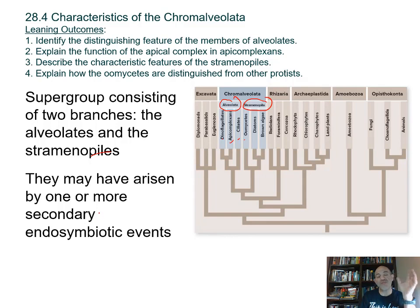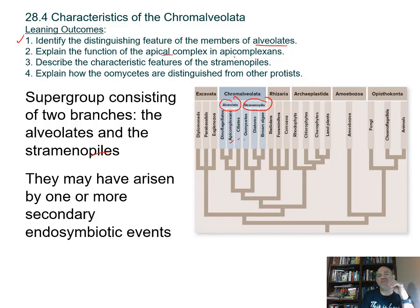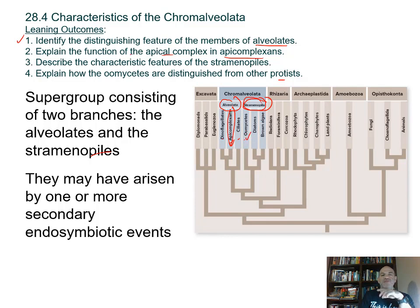Several subgroups exist within Chromalveolata. Some of them do have the ability to photosynthesize — in these cases it's secondary endosymbiosis, so the chloroplast would have evidence of four membranes around it. Learning outcomes include identifying distinguishing features of the alveolates, explaining the function of the apical complex in apicomplexans, describing the characteristic features of stramenopiles, and explaining how oomycetes are distinguished from other protists.